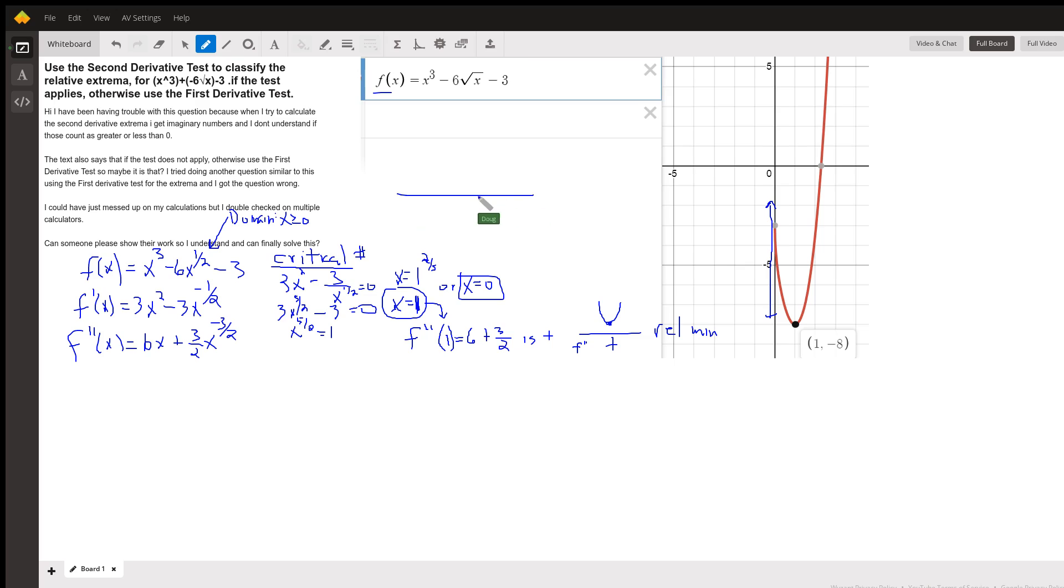which the first derivative test is like this guy right here. f prime tells us whether f is increasing or decreasing. And we will get something that looks like this, which tells us we have a relative minimum.